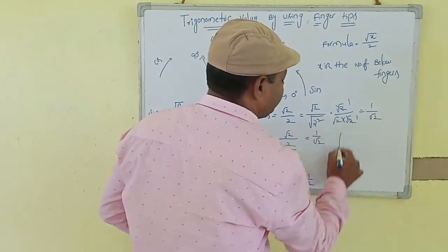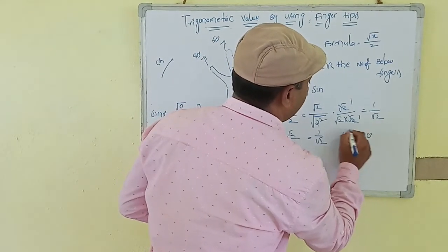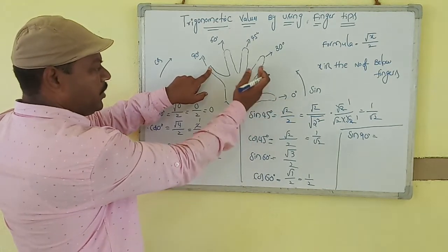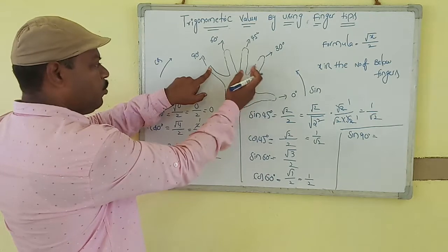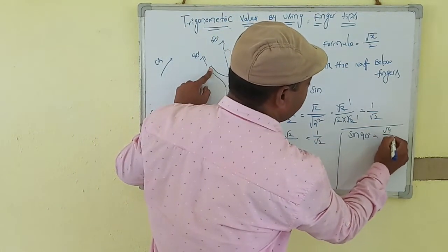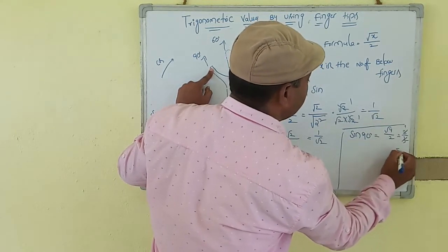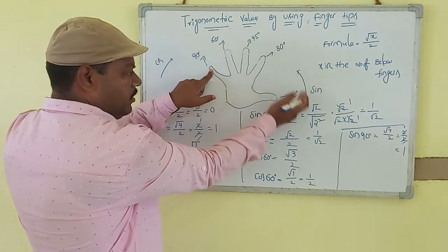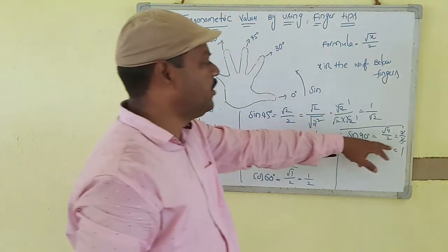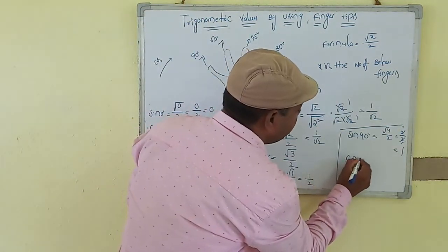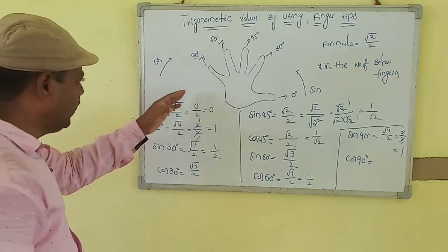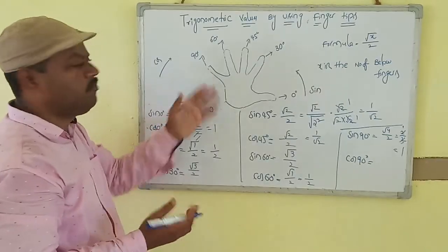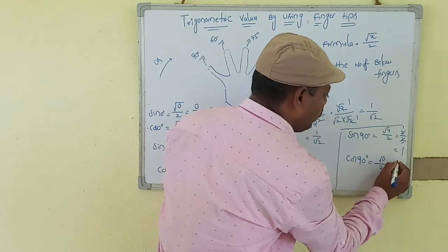Now sine 90 and cos 90. For sine 90 degrees, the little finger is at 90°. In the sine direction, how many fingers are below it? One, two, three, four — four fingers. So sin 90° = √(4)/2 = 2/2 = 1. For cos 90°, in the cosine direction, no fingers cross, so cos 90° = √(0)/2 = 0.